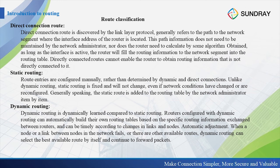Directly connected routes are discovered by the link layer protocol. For static routes, the route entries are configured manually rather than determined by dynamic or direct connections. For dynamic routing, routers configured with dynamic routing can automatically build their own routing table. For static routing, traffic is transferred by the static route, but for dynamic routes, it always changes.